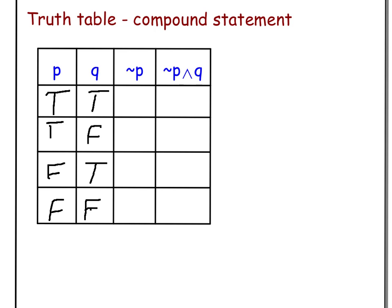Now for the negation of P, whatever value P has, not P has the exact opposite value. So the first P is true, so not P would be false. Same here. The last two values for P are false, so the opposite of that will be true.